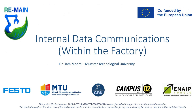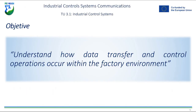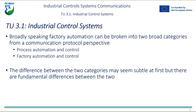This unit is going to focus on training unit 3.1, which is internal data communications within the factory itself. The objective here is to understand how data transfer and control operations occur within the factory environment. We will look at the current setups within the factory environment and the differentiators between various communications channels depending on what type of process control you're doing.